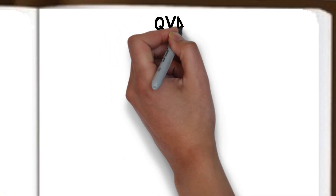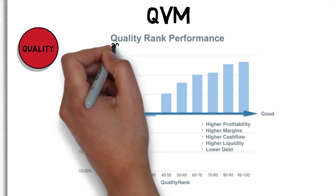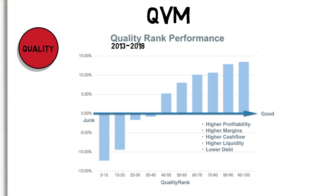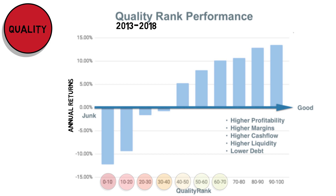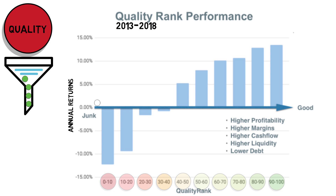But what are the fundamental criteria used to form the quality, value and momentum factors? First, we look at quality. This chart shows the performance of quality factors measured from 2013 through to 2018. To the left, the average annual returns, and at the bottom of the chart, we have the stock scored and ranked based on the quality criteria measured. A quality company is often defined as such by having good profitability, high margins, positive cash flow, adequate liquidity, and low levels of debt. Using these quality factors as a filter to find good companies proved very effective.